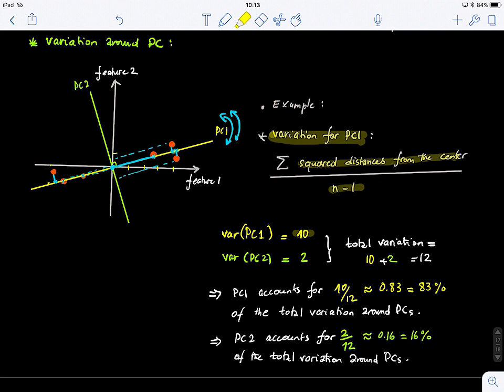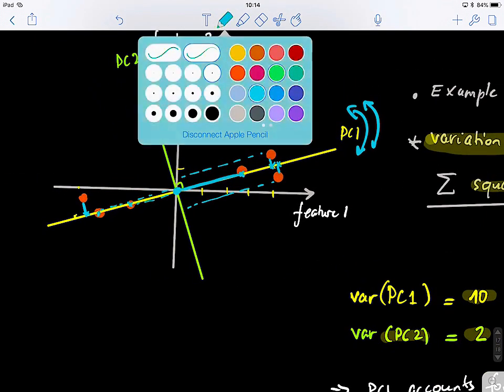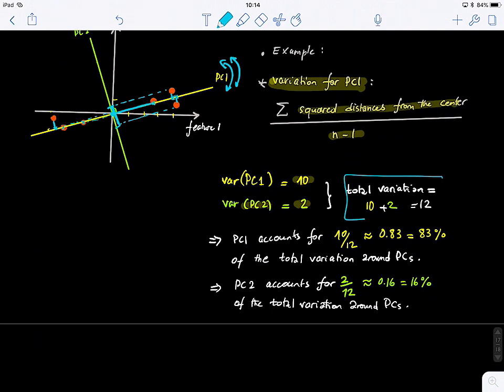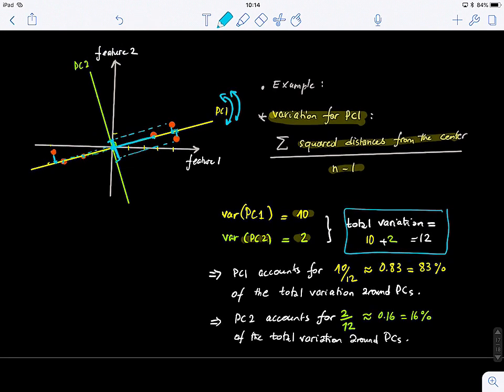And when we compute the variation of the data for PC2, we get two. Because you guys can see that this value, if we project the data onto PC2, we have less variation. So the breadth is much smaller. So then we compute the total variation by summing them up across our two principal components in this case, because we are in a two-dimensional space. And then by computing just the percentage we get for PC1, we get 83%. So we divide the variance of PC1 by the total variation. And then we get that PC1 accounts for 83% of the total variation of the data. So you can see that it retains a lot of information about the data. And now for PC2, it retains only 16%.